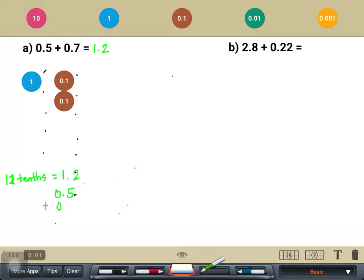So, 5 tenths plus 7 tenths is 12 tenths. The 2 tenths will go here and the remaining 10 tenths would create 1 whole which I will regroup there in the 1's place and that would now be 1 and 2 tenths.